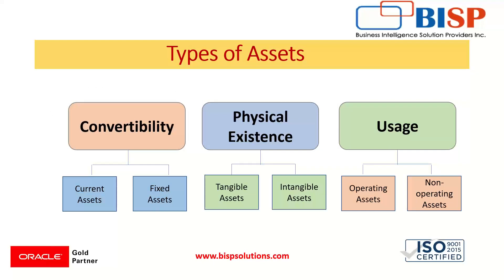Moving ahead, we will get to know about the types of assets. Assets can be classified according to convertibility, physical existence, and usage. Under convertibility, two categories are found. First is current assets — assets that can be converted into cash or cash equivalents, such as cash, accounts receivable, and similar items. Next, we have fixed assets, which are the long-term assets used by the company for generating future income. Land, building, machinery, and furniture are examples of fixed assets.